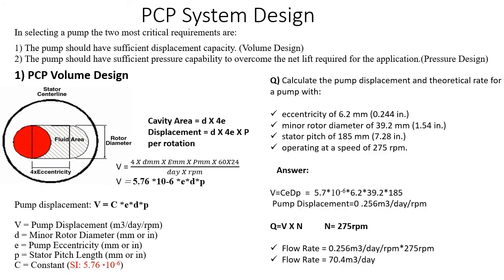The two most critical requirements in designing a PCP when selecting a pump are: the pump should have sufficient displacement capacity, and the pump should have sufficient pressure capacity to overcome the net lift required for the application. The first falls under volume design and the second under pressure design. From reservoir deliverability studies, we determine the desired production rate, and based on that we select the pump model with the appropriate eccentricity, minor diameter, and pitch length to achieve the desired flow rate.